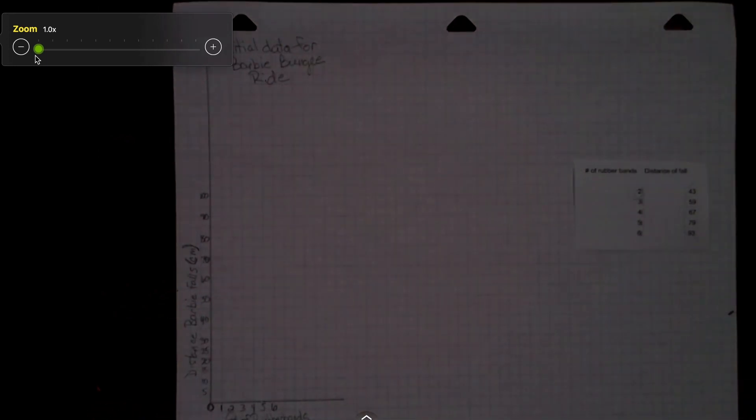They need a title for their graph. This particular graph is the initial data for Barbie's bungee ride. I do not give my students the title for the graph. That is something they have to determine. I always tell them that the title should tell me what it is I'm looking at in that data.